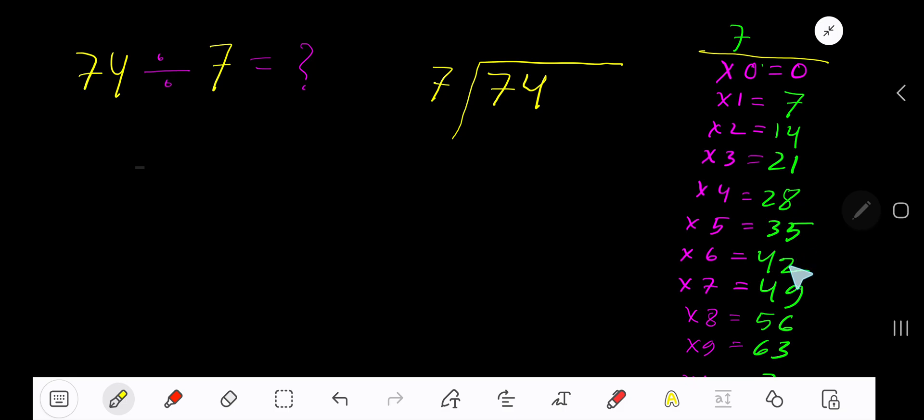21 plus 7 is 28. This process continues. 7 goes into 7 how many times? 7 goes into 7 one time. 1 times 7 is 7. Subtract to get 0. Bring down the next digit, 4. 7 goes into 4 how many times?